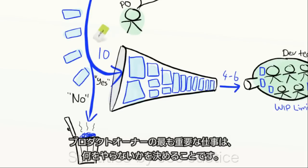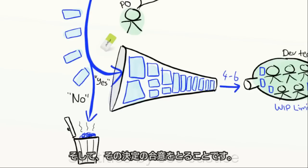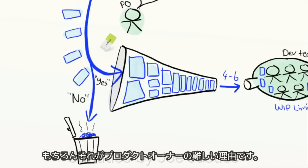The most important job for a product owner is to decide what not to build and take the consequences of that decision. And that's why it's hard, of course.